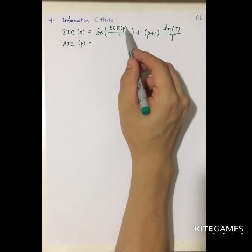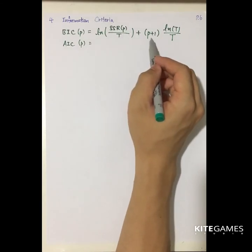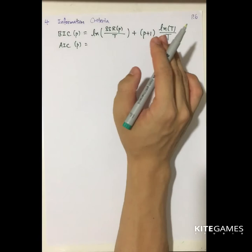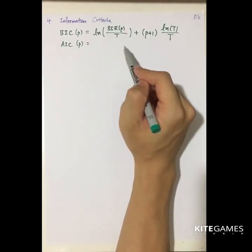So with more lags, the SSR will be smaller, but this will be greater, so you need to find the maximum P that minimizes the BIC.